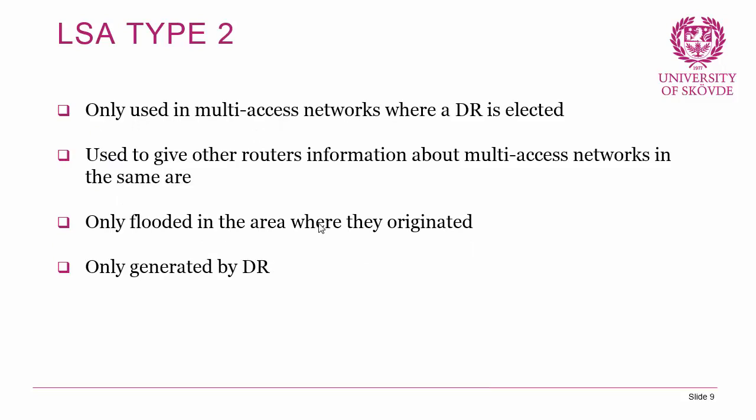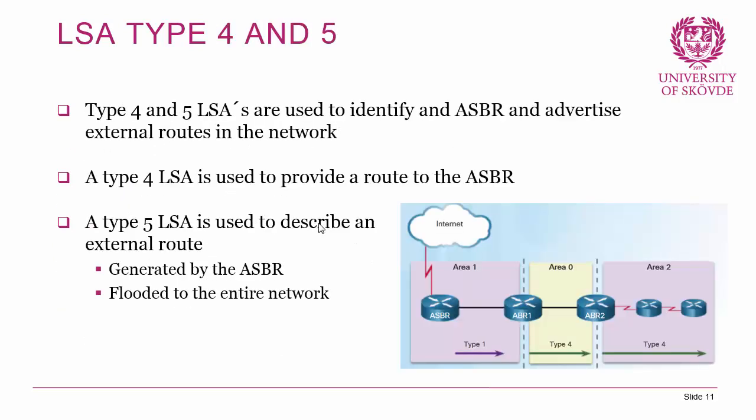LSA type 4 and type 5 are used to identify and advertise external routes within the network. These are sent by ASBRs — Autonomous System Boundary Routers — and are used to advertise external routes. An ASBR has a route to an external network, and it uses type 4 and type 5 LSAs to identify and distribute those external routes within the OSPF domain.